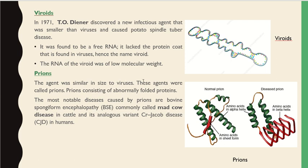Prions are agents similar in size to viruses, consisting of abnormally folded proteins that lack nucleic acid. The most notable disease caused by prions is bovine spongiform encephalopathy, commonly called mad cow disease in cattle, and its analogous variant Creutzfeldt–Jakob disease, which occurs in humans.